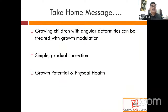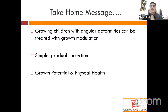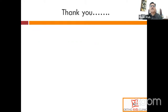The take-home message is that growing children with angular deformities can be treated with growth modulation. As this lecture is long, I have not discussed growth modulation for limb length discrepancy management, which will be dealt with in other sessions. It is a very simple and gradual correction. The parent should be intellectually informed about how this technique works and the need for implant removal in time. One must be aware of growth potential and the health of the physis before considering this treatment. Thank you very much, and I hope this lecture has helped in your decision making about growth modulation.